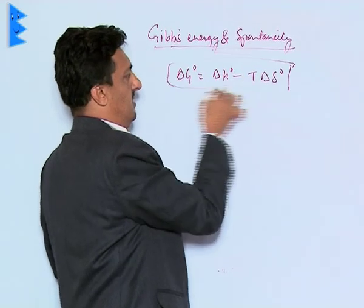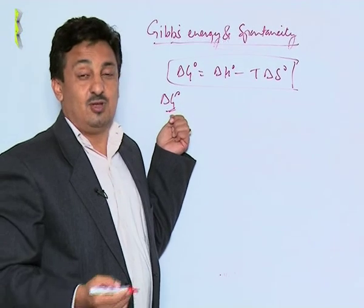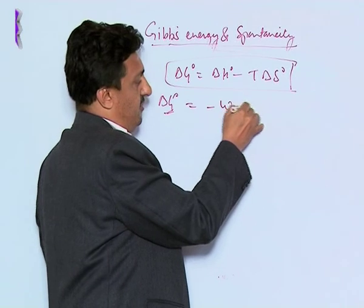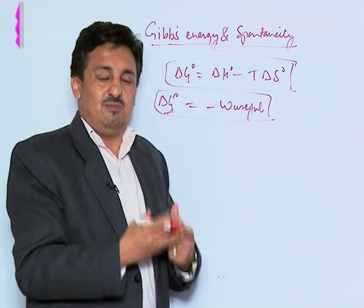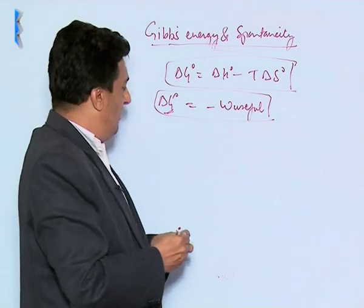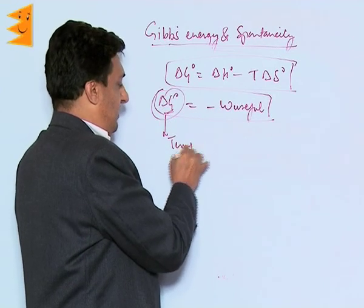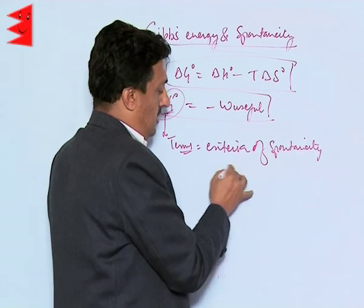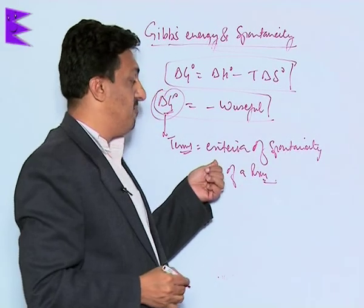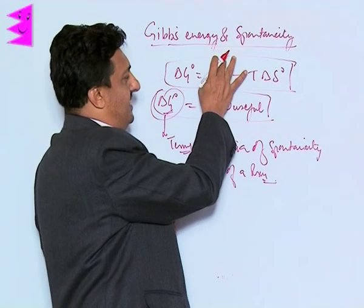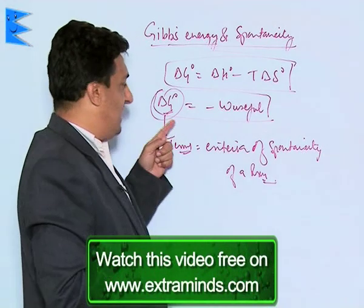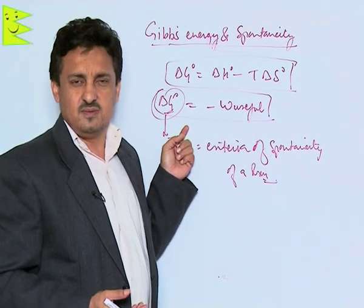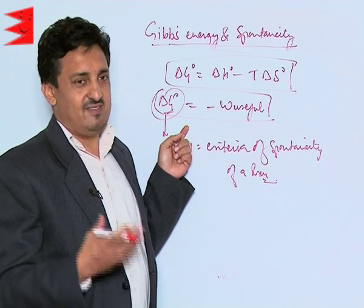Delta G is the Gibbs free energy — it is the amount of energy available to the system that is actually used for useful work, so it equals negative W useful. It is the actual term that gives us the exact criterion of spontaneity of a reaction. It is a state function — its absolute value cannot be determined, only the change in its value. Delta G naught indicates the standard free energy change at standard temperature and one bar pressure.